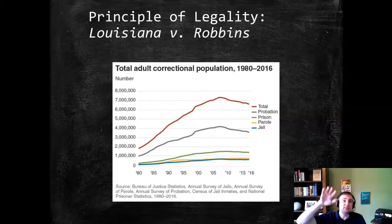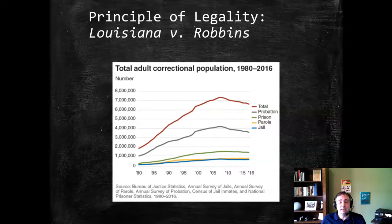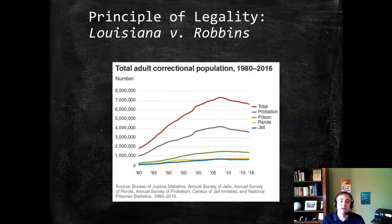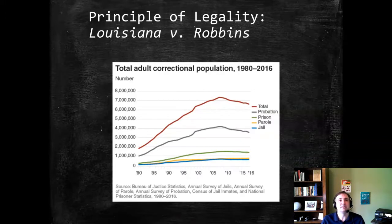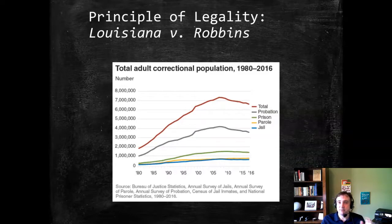The Bill of Rights isn't even really applied to the states until the 20th century, as you'll learn about in constitutional law through the process of incorporation. So there are two very radical things about the inclusion of the ex post facto clause in the Constitution. One, it's a statement as to rights when the framers were not very interested in doing that — that didn't necessarily mean they didn't want rights, they just didn't necessarily think it fit within the body of the Constitution and its purpose. And then the fact that they were willing to apply it to the states, which was a very different relationship between the federal government and states than existed under the Articles of Confederation.